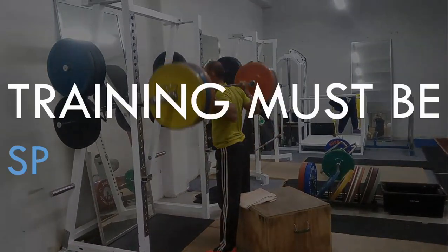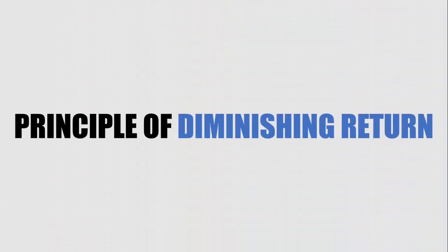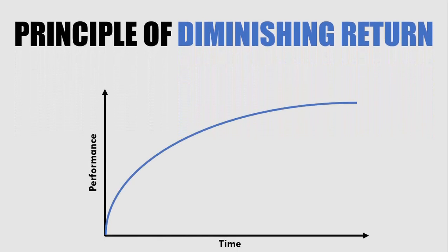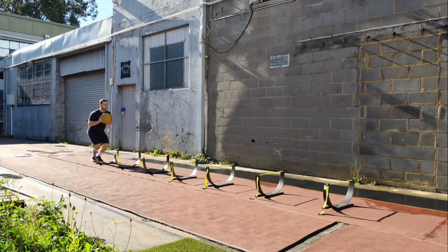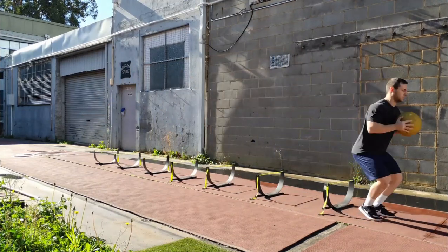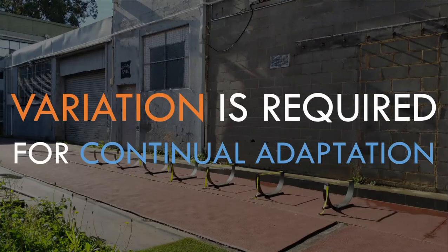To get better at a physical quality we need to train that physical quality. This is important to understand because it means we need to practice a skill or quality for an extended period of time to actually improve. The second principle to understand is diminishing returns. If we continue to perform the same training method over and over again we will plateau, therefore variation needs to be implemented to continue progressing over time.